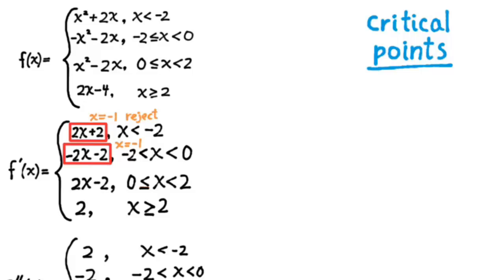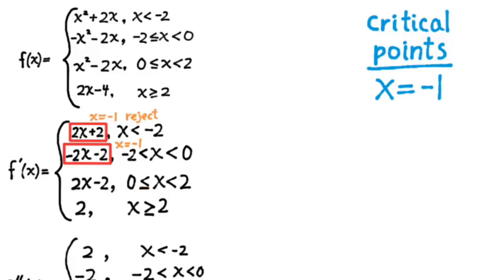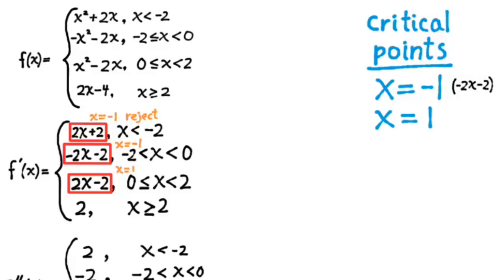Negative 2x minus 2 has a zero at x equals negative 1, and x equals negative 1 is inside the subdomain where negative 2x minus 2 applies. So x equals negative 1 does turn out to be a critical point — we put it on the list, remembering it comes from a zero of negative 2x minus 2. Then we find a zero of 2x minus 2: that's x equals 1, which is inside the corresponding subdomain, giving us another critical point — a stationary point. The last piece, 2, has no zeros, so those are all the stationary points.